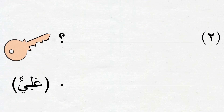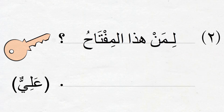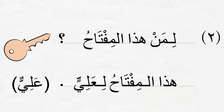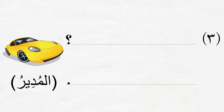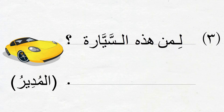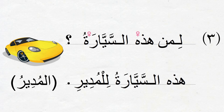Part 2 is about مفتاح. The question is: لمن هذا المفتاح, and the answer is: هذا المفتاح لعلي, because we are given the name علي in the hint. Part 3 is about السيارة. The question this time is: لمن هذه السيارة — notice I am using مؤنث اسم الإشارة because السيارة is مؤنث. We have المدير given in the hint, so the answer is: هذه السيارة للمدير. Here, هذه is the مبتدأ, السيارة is the بدل for هذه, and للمدير is the خبر شبه جملة.